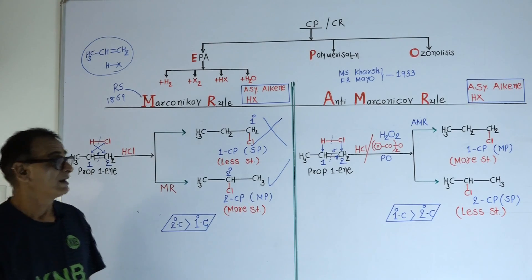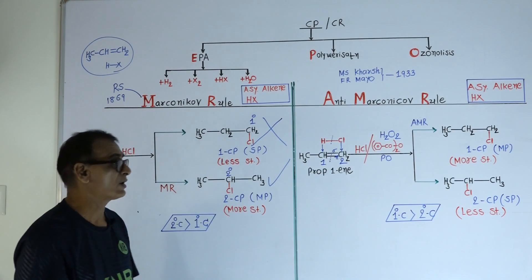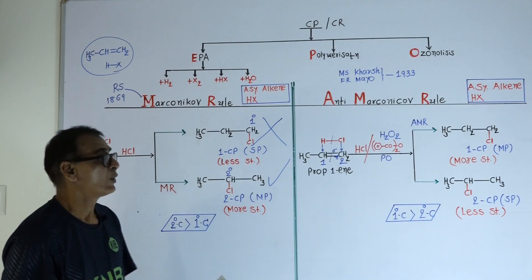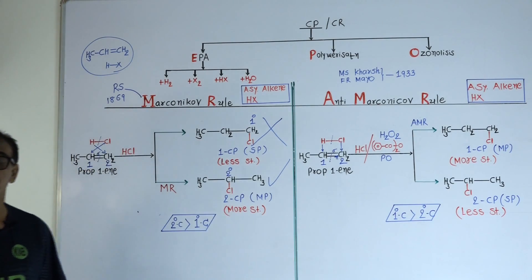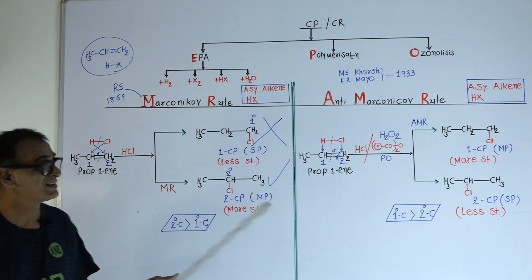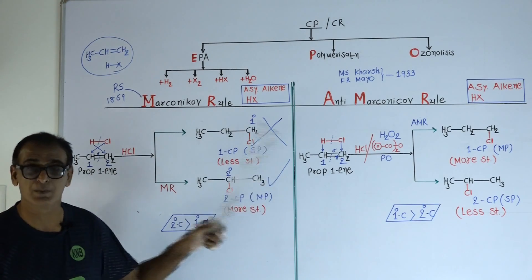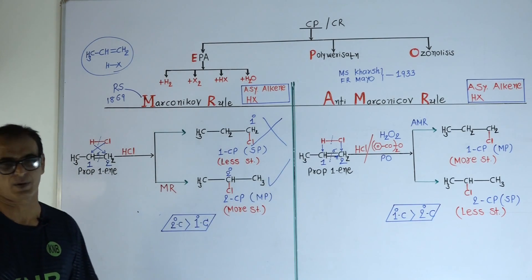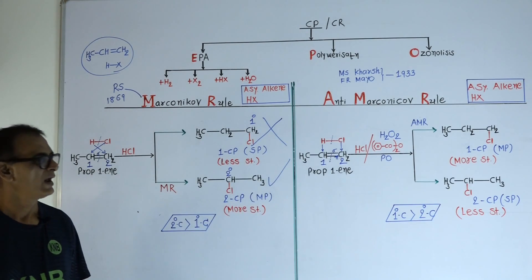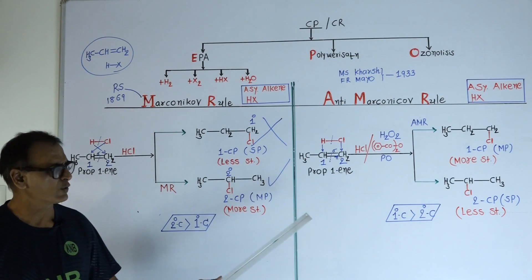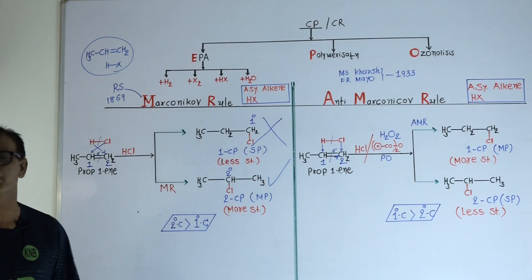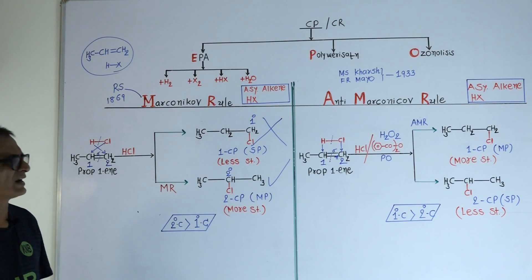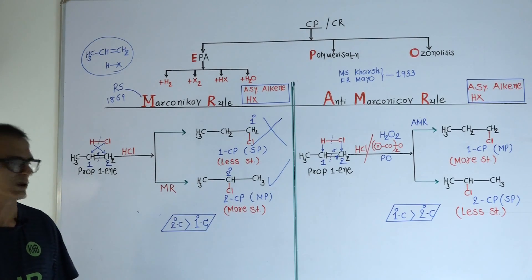Under Anti-Markovnikov conditions (with peroxide catalyst), 1-chloropropane is the main product — it is the more stable product in this condition. And 2-chloropropane becomes the subsidiary (less stable) product.